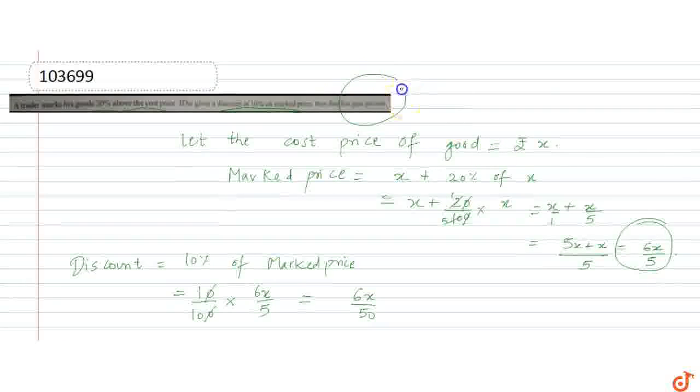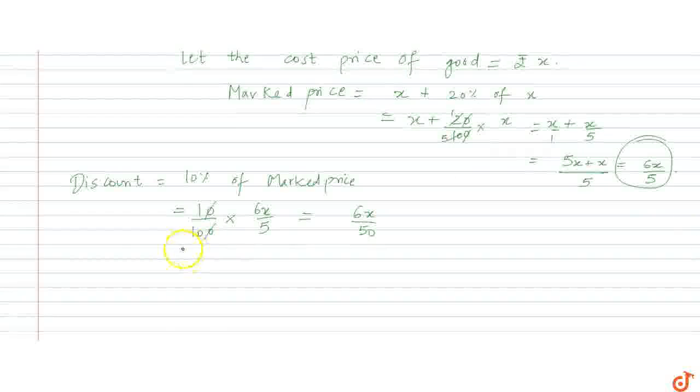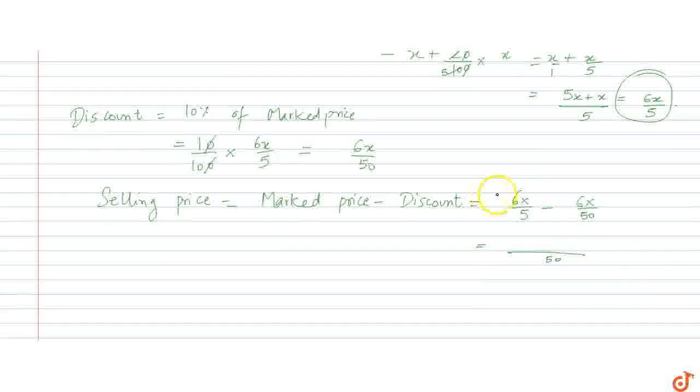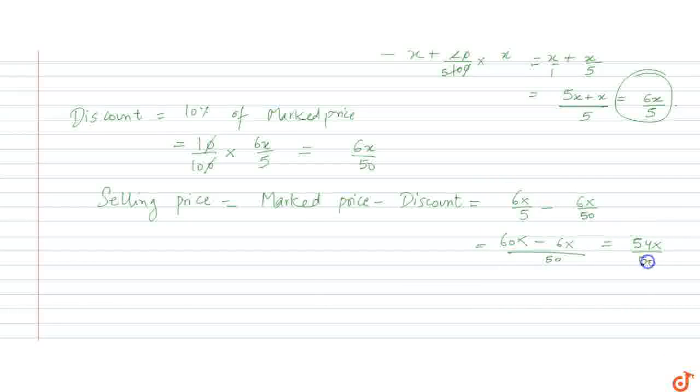Now we have to find the gain percentage. First find selling price. Selling price is marked price minus discount. So marked price is 6X upon 5 minus discount is 6X upon 50. Taking LCM here, 5 and 50 will give you 50 LCM. 10 into 6, 60 minus 6X, which is 54X upon 50.